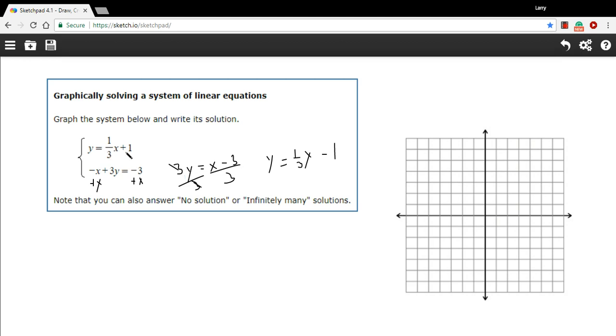So the first one, I have a y-intercept of positive 1, and then the slope is one-third. So that means it's going to go up 1 over 3. So up 1 over 3, up 1 over 3. So there's that line. And I'm going to be clumsy at sketching this in here on the computer, but something like that.